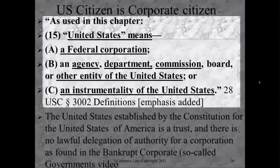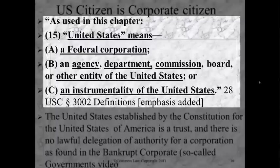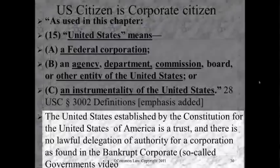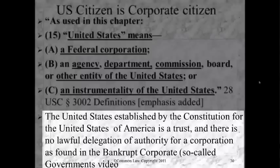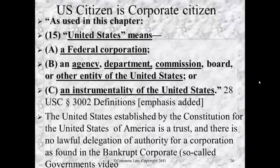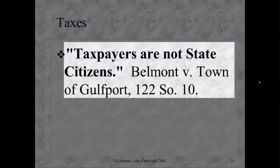A U.S. citizen is a corporate citizen. As used in this chapter, United States means a federal corporation, an agency, department, commission, board, or other entity of the United States — found in 28 U.S.C. Section 3002, Title 28 United States Code, which is the judiciary. So if you're going to sue the United States, you have to sue a corporation — and if you're a U.S. citizen, then by definition you're a corporation. The United States, established by the Constitution for the United States of America, is a trust. In 1871, they set up a corporation, and that's what you see operating.